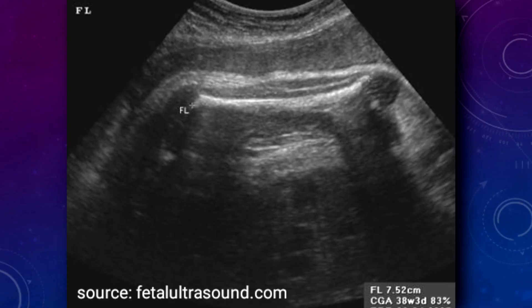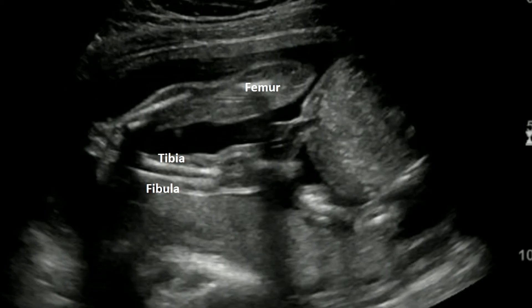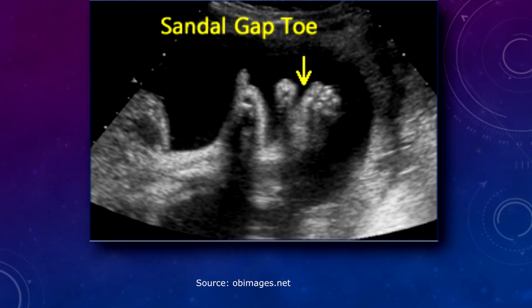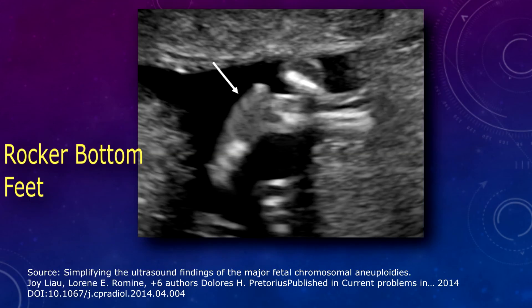Going into the lower extremities, your first stop would be at the femur. Here, you can measure the femur length, which is your last measurement for a general second trimester OB ultrasound. You want to make sure there are bilateral femurs, bilateral tibias and fibulas. You want to see the feet and all the digits. In the feet, you can see things like sandal gap or rocker-bottom feet, which are markers for fetal anomalies or trisomies. You can also rule out club foot.